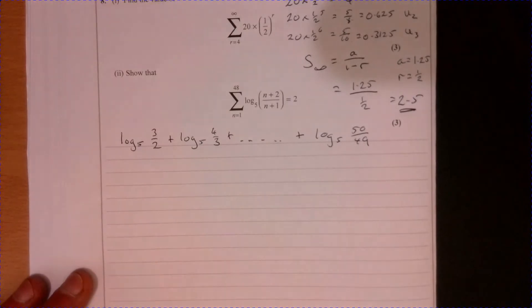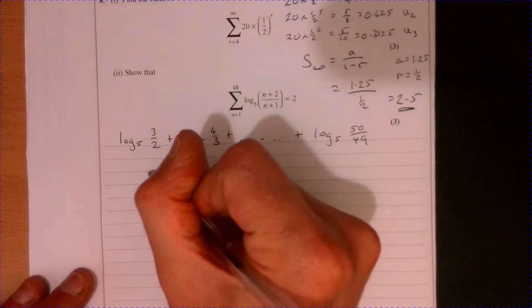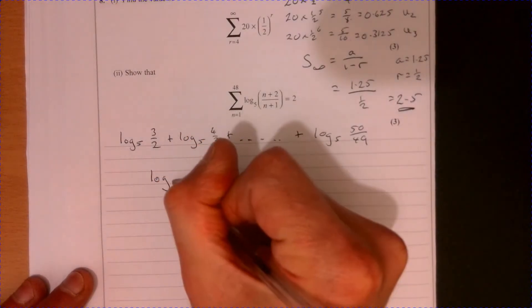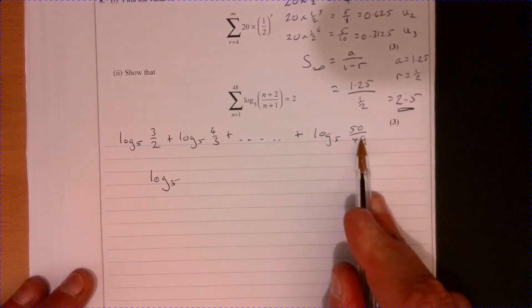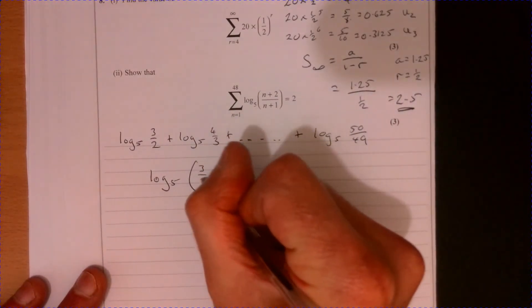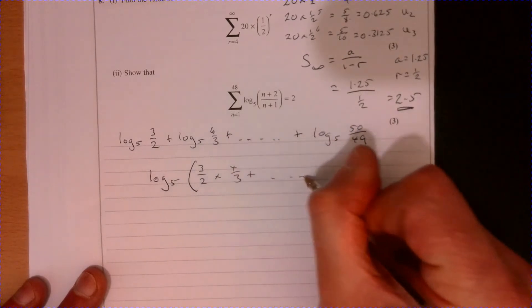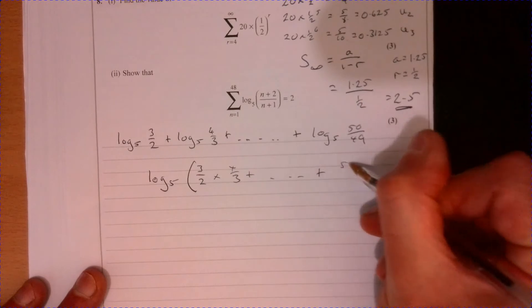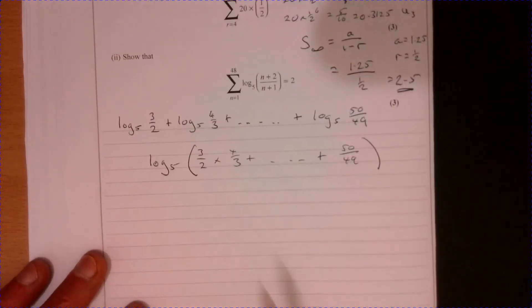Now just think about your basic laws of logs. If we want to add all these together, with two of them you just multiply them together. Well if I've got lots of them and I'm adding them together, we're just going to multiply them together. So it's 3/2 times 4/3, all the ones in between, and we're going to have that there.